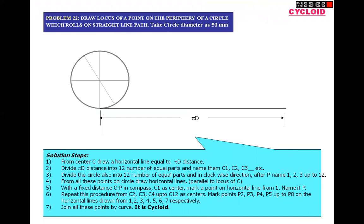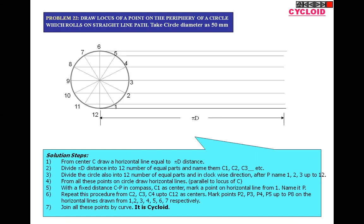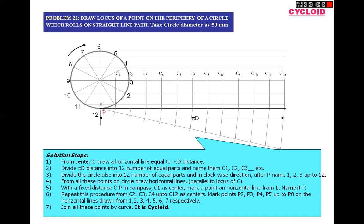For the cycloid, the problem statement is: draw the locus of a point on the periphery of a circle which rolls on a straight line path. Take the circle diameter as 50 mm. Divide this circle into 12 equal parts. Take the πd distance in a compass and draw a horizontal line. Draw a horizontal center line and divide it into 12 equal parts to get centers C1, C2, C3 up to C12.